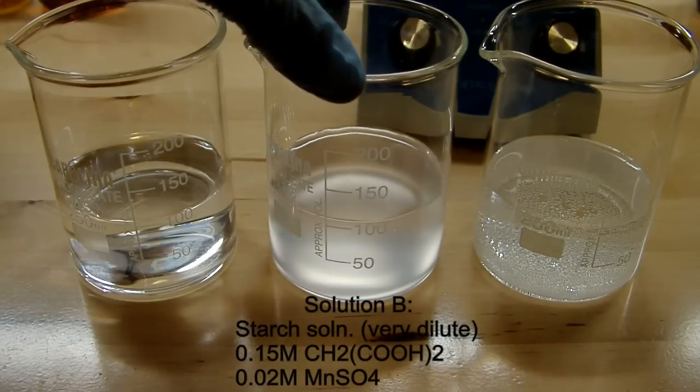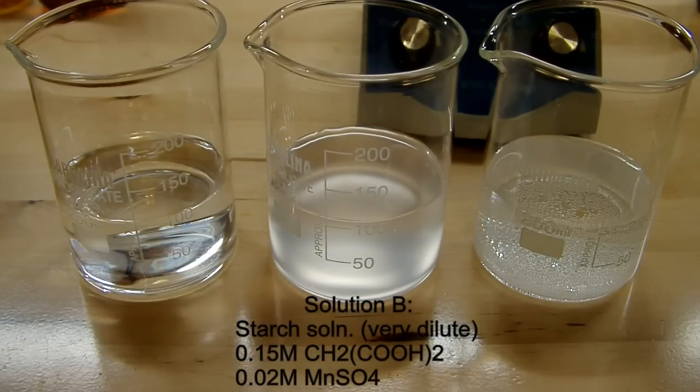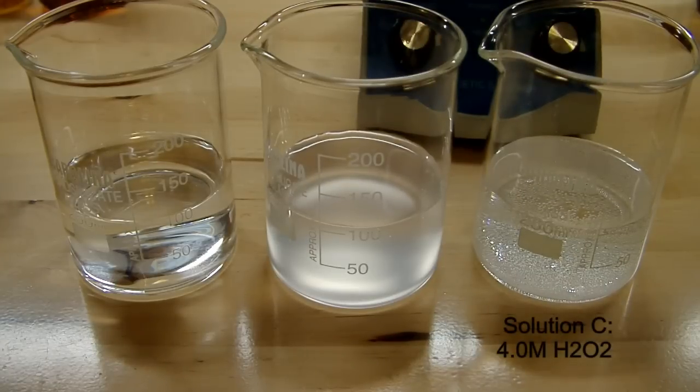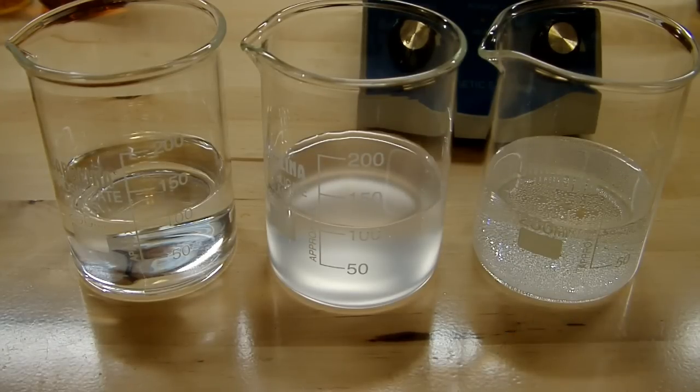Solution B is a starch solution that's 0.15 molar in malonic acid and 0.02 molar in manganese sulfate, and solution C is hydrogen peroxide, 4.0 molar hydrogen peroxide. I diluted down some 35% peroxide that I had to get this concentration.